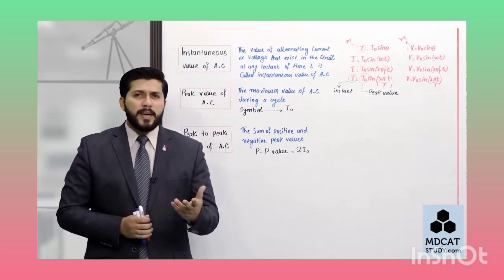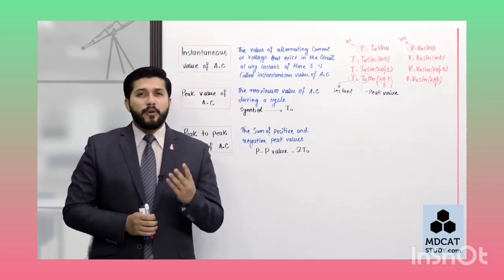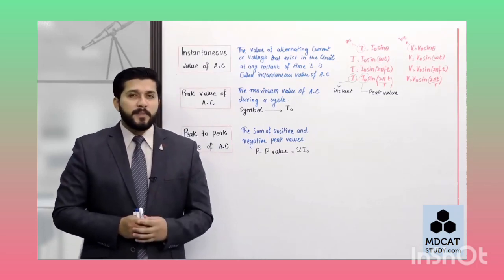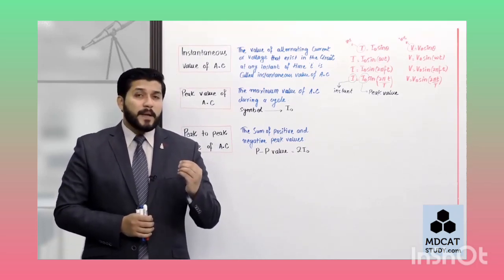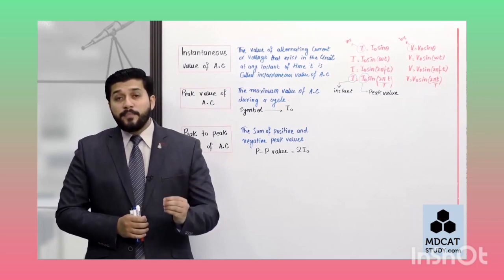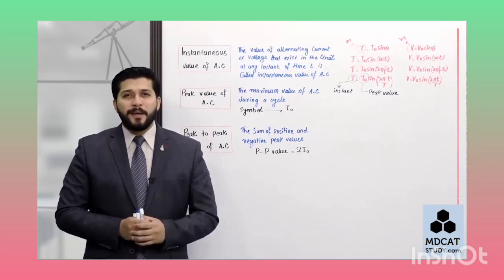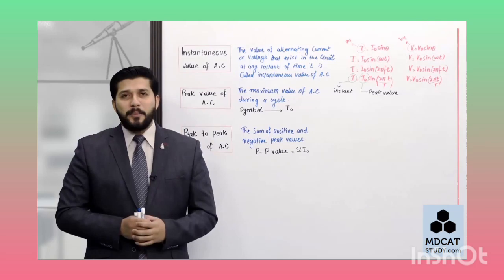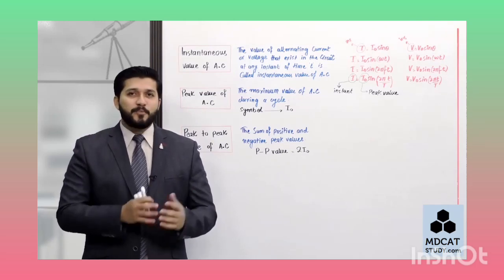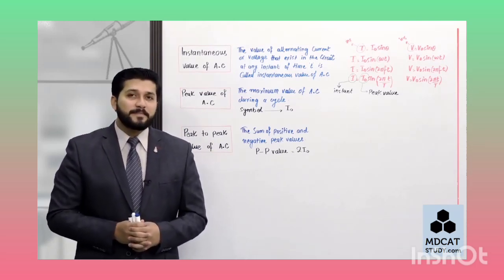یہ تو ہو گئیں تین قسم کی terminologies - instantaneous، peak، اور peak to peak۔ اب ہم چلتے ہیں fourth terminology کی طرف جو نہ صرف زیادہ important ہے بلکہ تھوڑی مشکل بھی ہے۔ وہ ہے rms value of current - آئیے دیکھتے ہیں کہ یہ کیا ہے۔